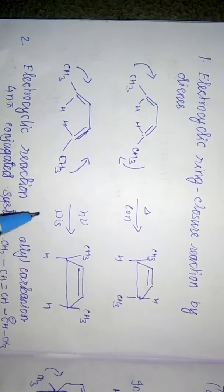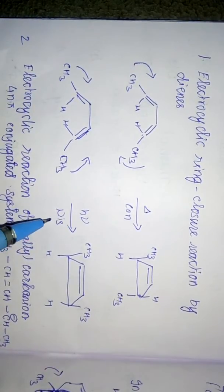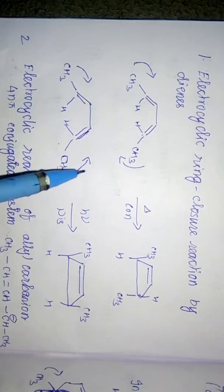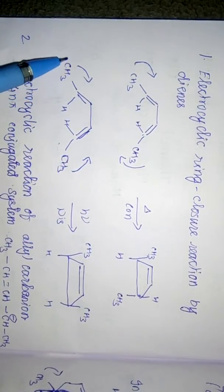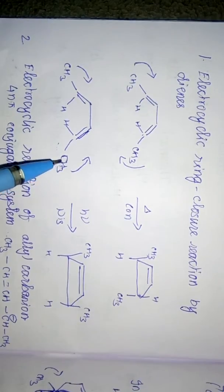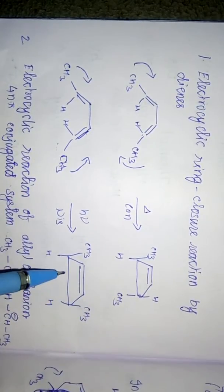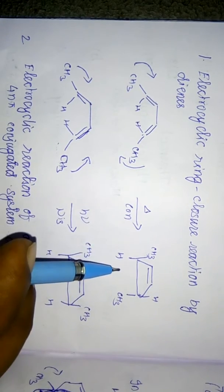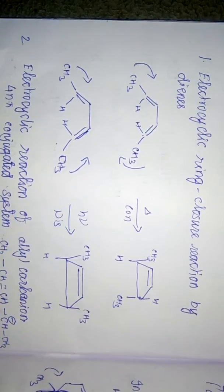Under photochemical conditions, a 4π system undergoes disrotation. In disrotation, if one carbon rotates clockwise the other rotates anticlockwise, so both methyl groups go up, giving the cis isomer. In thermal conditions it gives the trans isomer. This is the major difference between conrotation and disrotation.